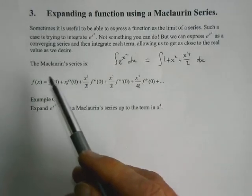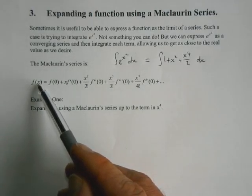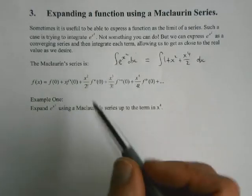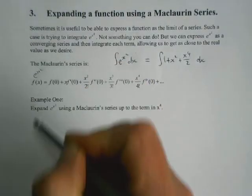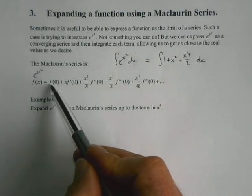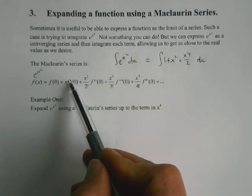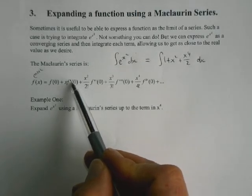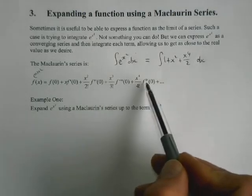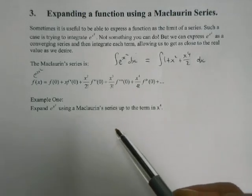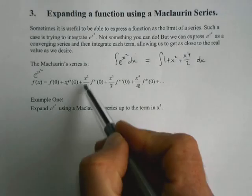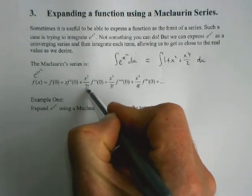This is an extremely exciting formula. f of x is the function we're trying to work with. f of 0 is just that function evaluated at the point 0. x is x. f dash of 0 means you have to differentiate it and evaluate it. Second derivative, third derivative, fourth derivative, etc. And then the other fancy thing is what we call a factorial.